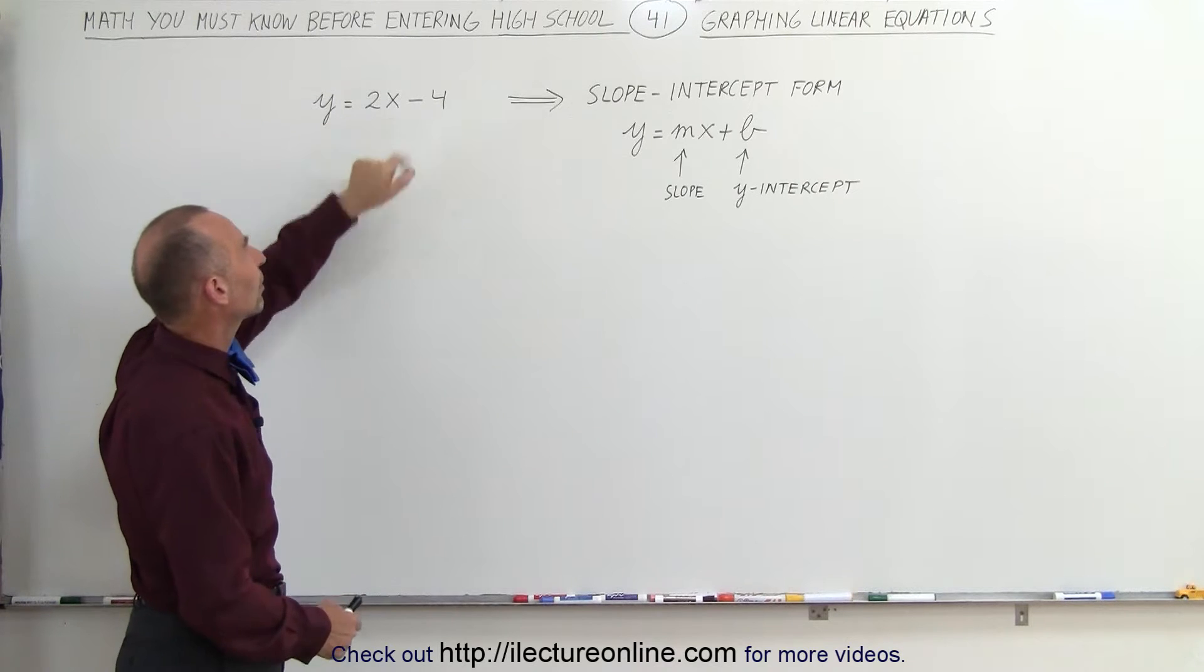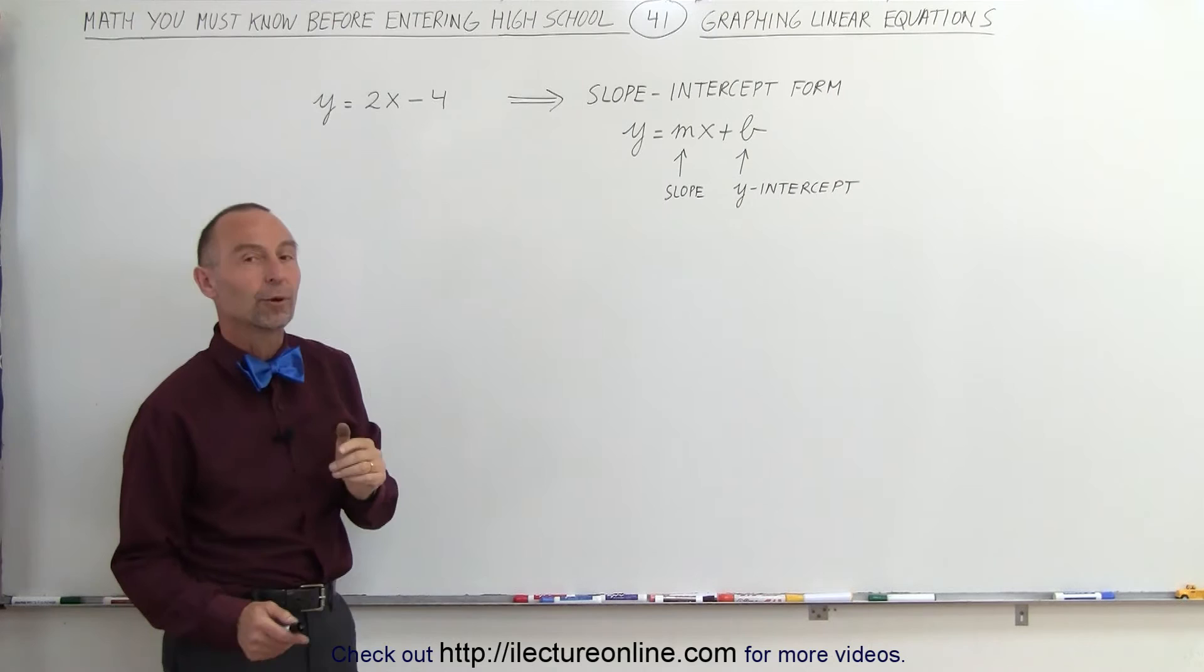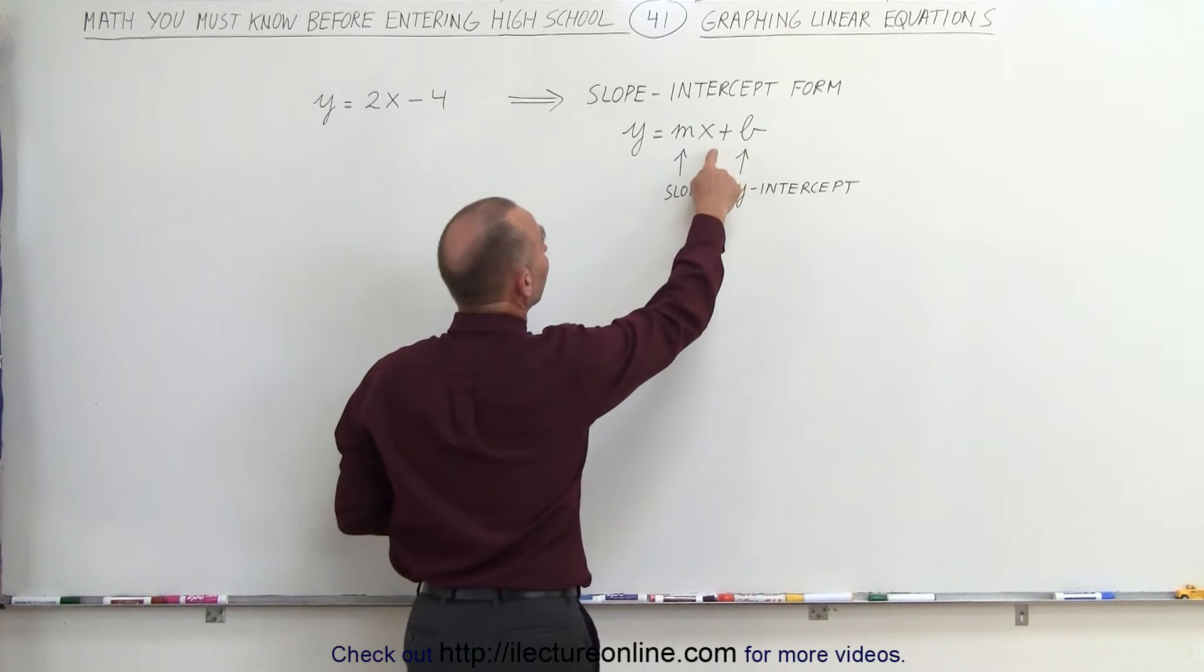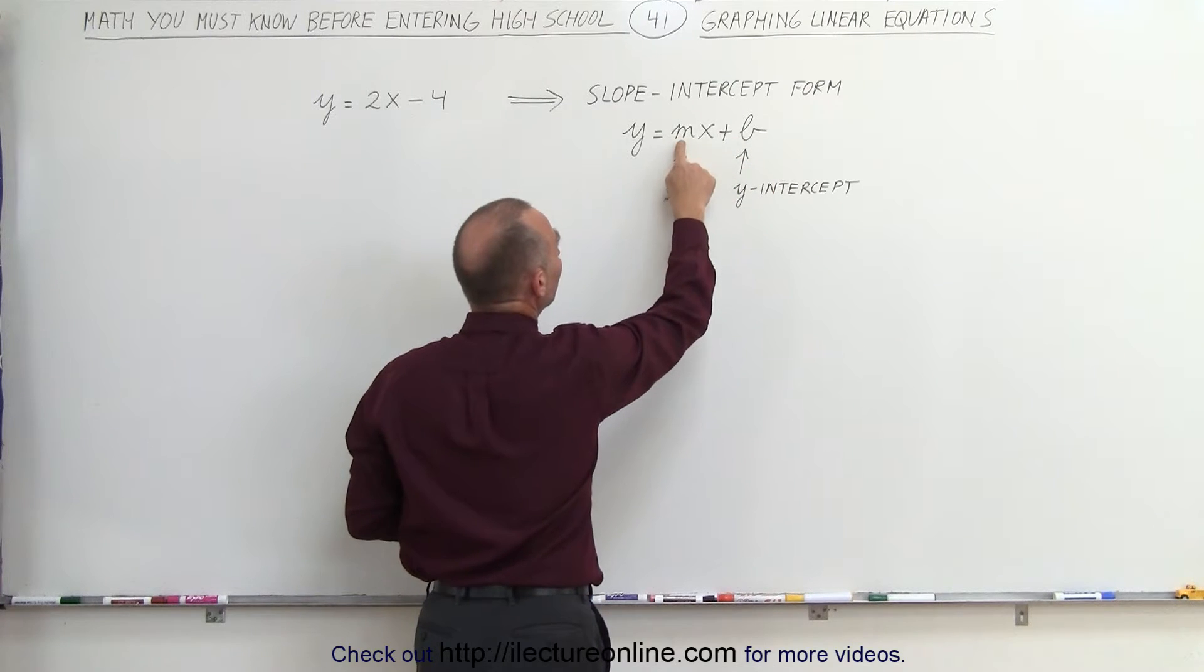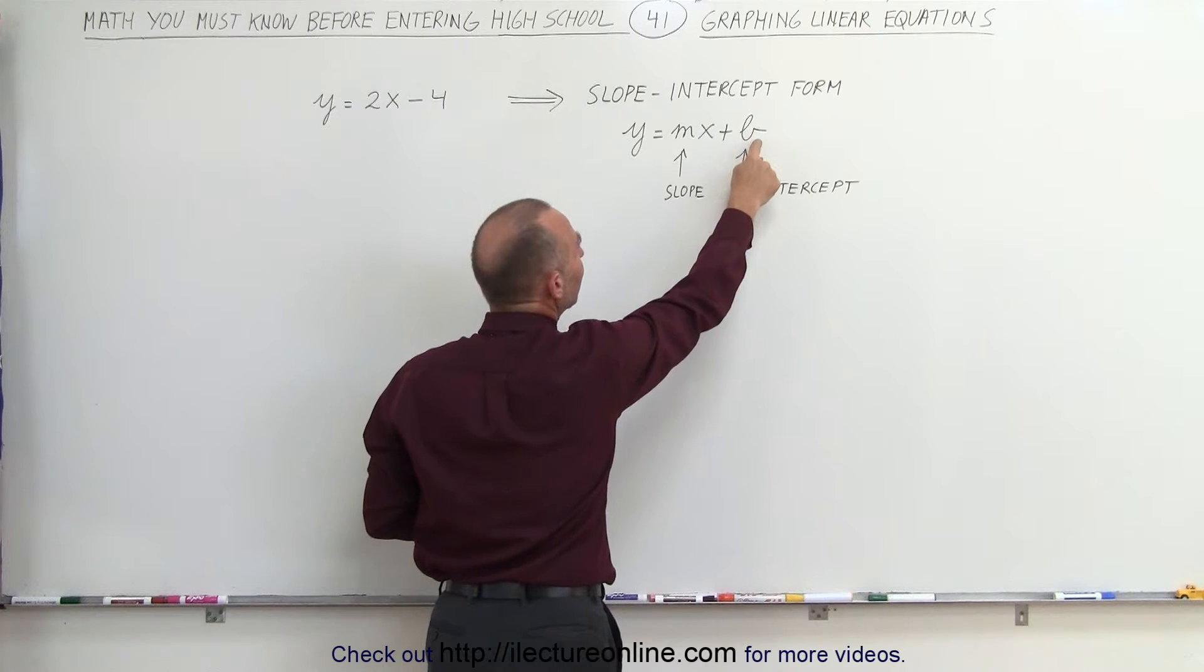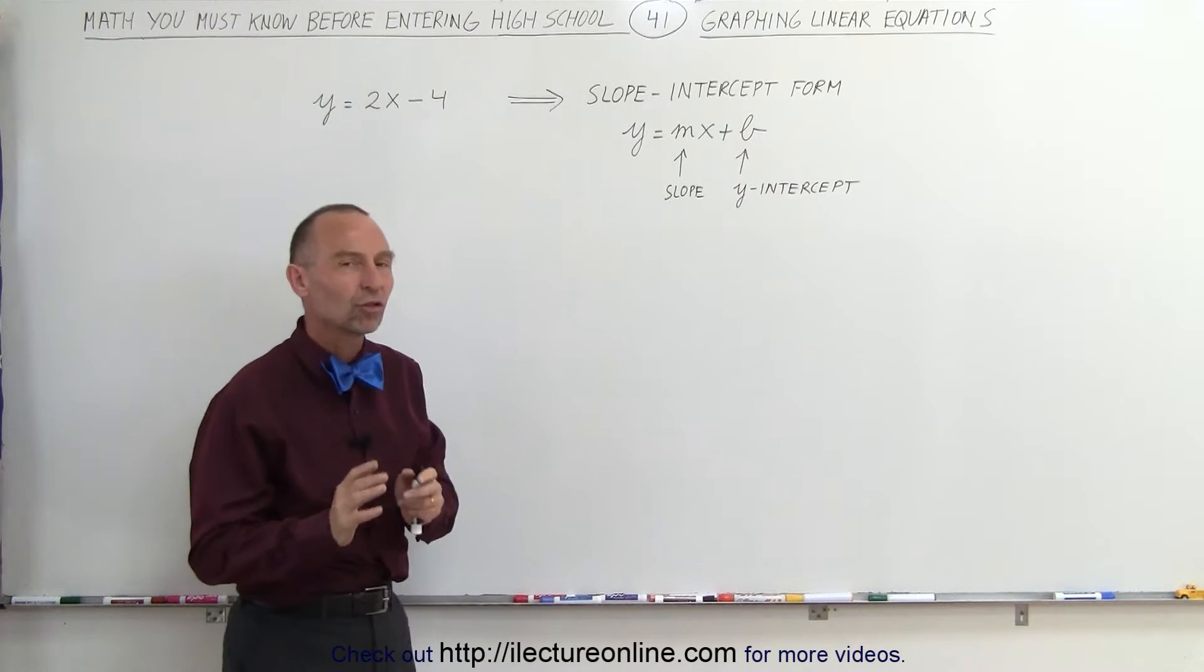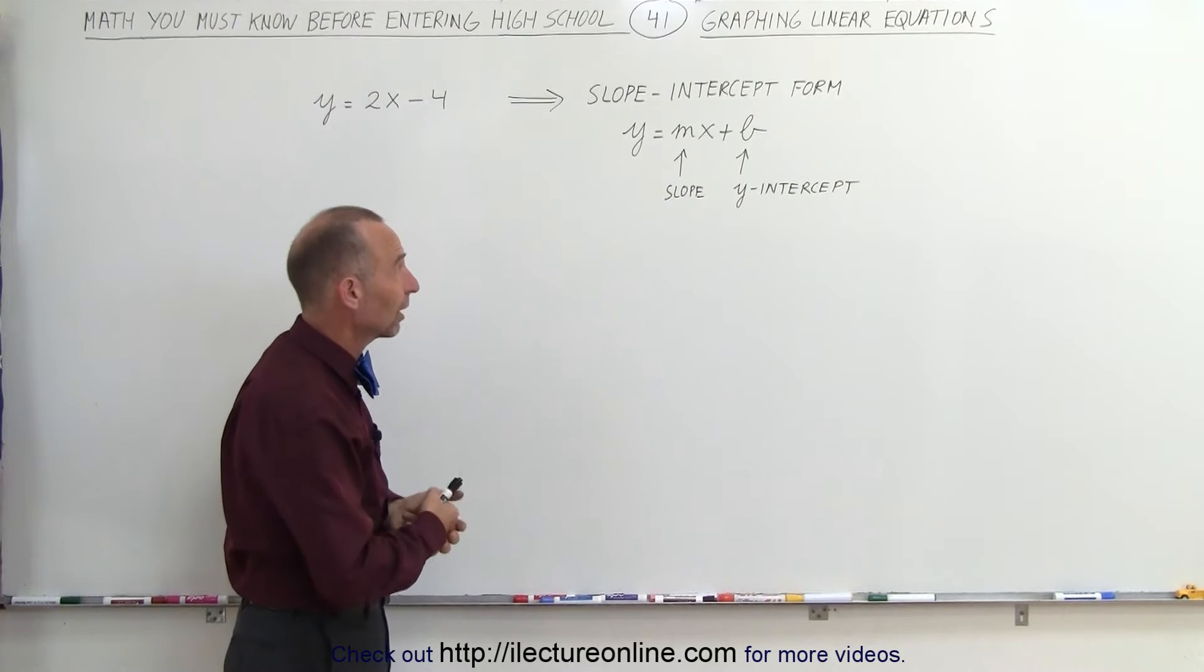We have y equals 2x minus 4, placed in what we call the slope-intercept form. The general form of that equation is y equals mx plus b, where m, the coefficient in front of the variable x, is the slope, and b, the number by itself, is called the y-intercept.